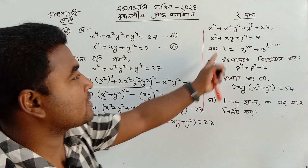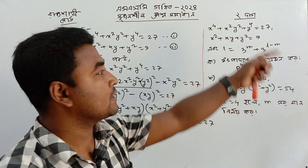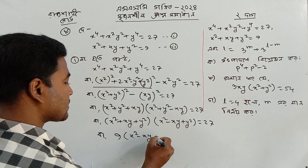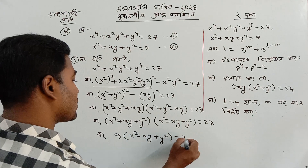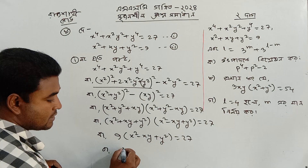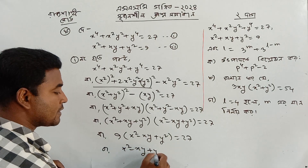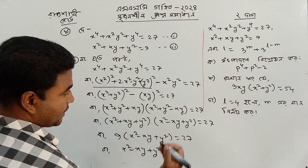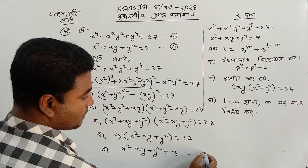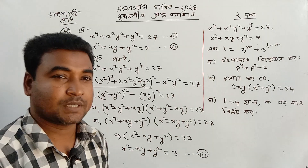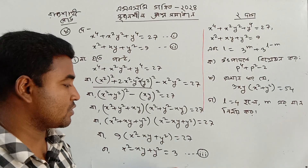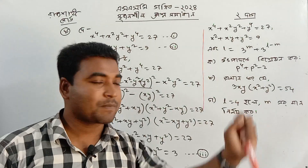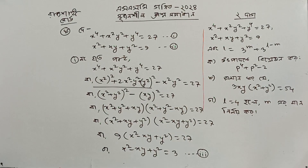So (a plus b) whole square minus (xy)² equals 27, and this gives us a plus b into a minus b equal to 27. Therefore, 9 times x² plus xy plus y² into x² minus xy plus y² equals 27.